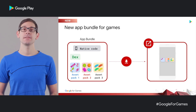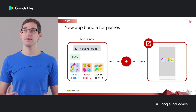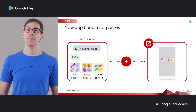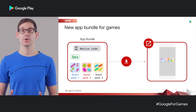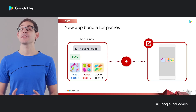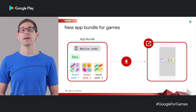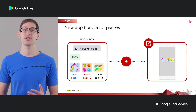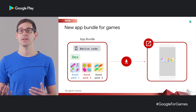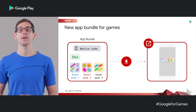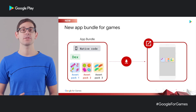We have extended the app bundle format to include a new delivery construct for games, called Asset Packs. An Asset Pack is a container of assets — no code — and it can be very large. You can add all types of assets into your Asset Packs, from graphical textures to meshes, shaders, multimedia files, etc. Asset Packs are packaged in the app bundle together with your binary, so you can publish one single artifact to Play containing everything that your game needs.